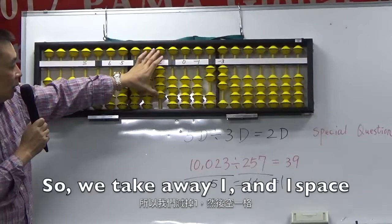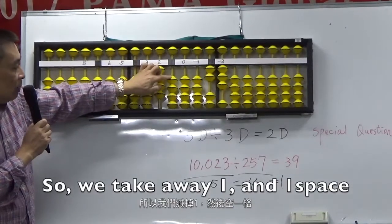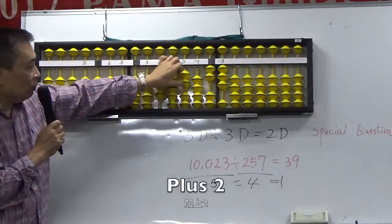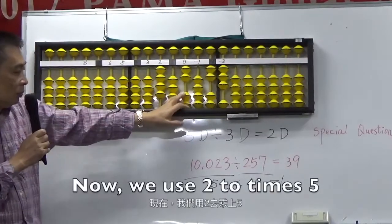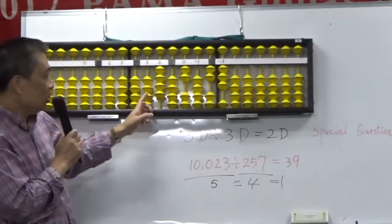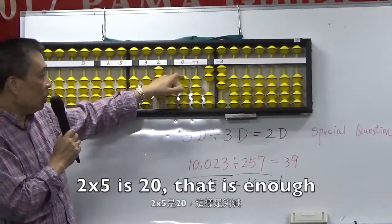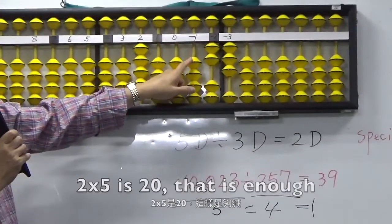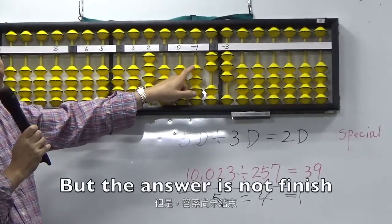So, we take away 1 and 1 space plus 2. Now, we use 2 to times 5. 2, 5 is 20, enough.